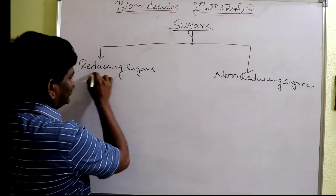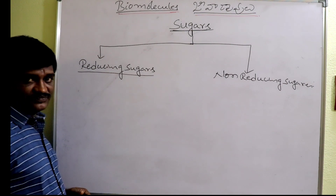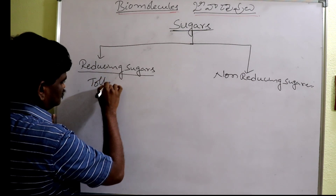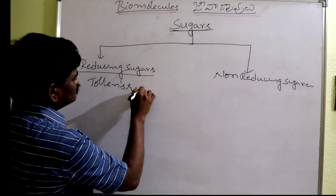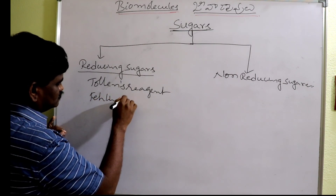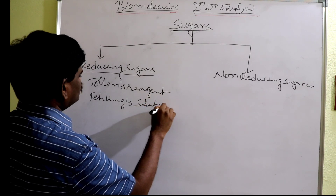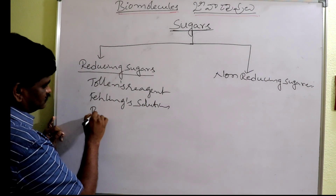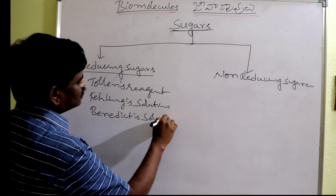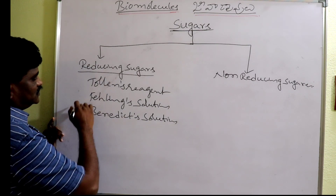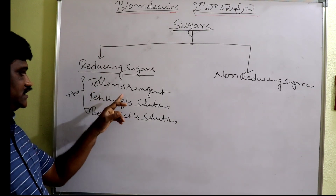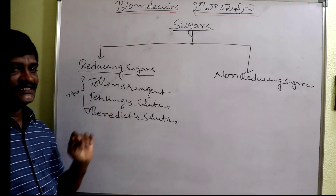What are reducing sugars? Carbohydrates which can reduce Tollens reagent, Fehling solution, and Benedict solution — and give a positive test towards Tollens reagent, Fehling solution, and Benedict solution — are called reducing sugars.